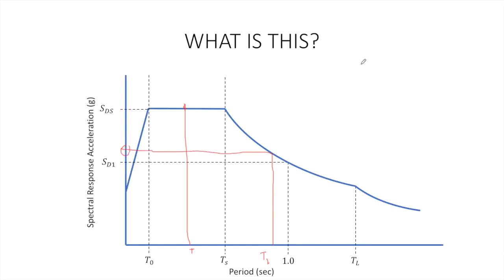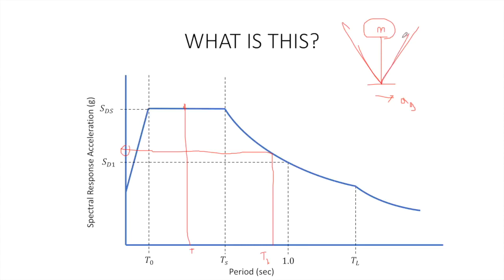When I'm talking about response acceleration, I'm talking about the response acceleration of a single degree of freedom system — in the classical sense, where I've got a weightless rod with some mass at the top, and I'm applying some acceleration at the ground. The mass is going to go back and forth, displacing in-plane, and it's going to have some acceleration. That acceleration is what you see plotted here.